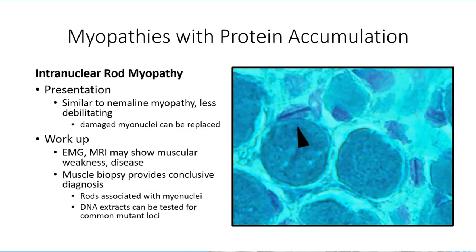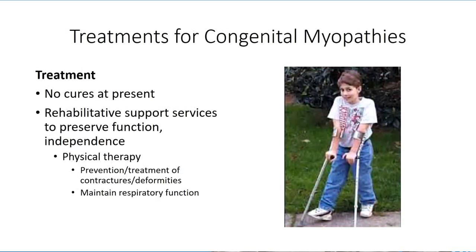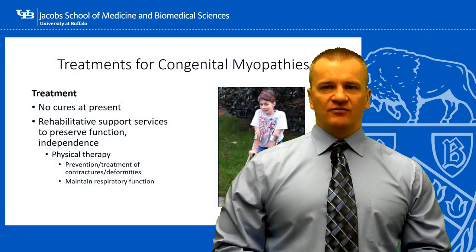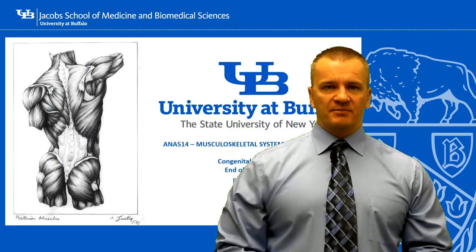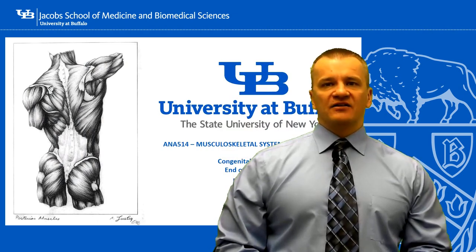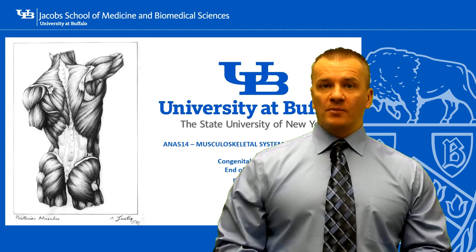The workup for intranuclear rod myopathies is almost identical to that seen for nemaline rod myopathy. Again, the muscle biopsy makes the diagnosis, but in this case the protein aggregates are localized to the myonuclei instead of the cytosol. As is the case for the other myopathies we have discussed, there is no cure for the protein aggregate myopathies. Treatment is focused on preserving independence for the patient for as long as possible and prolonging life expectancy. That wraps up our discussion of protein accumulation myopathies. In the final segment, we will look at an additional class of congenital myopathy: the core myopathies.